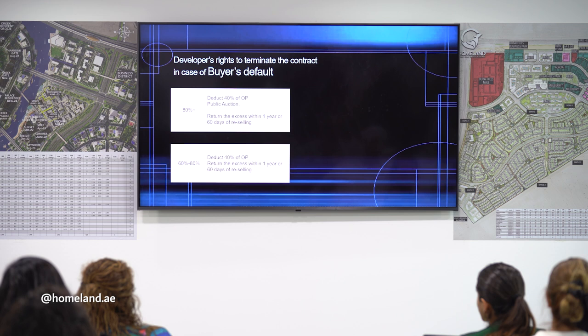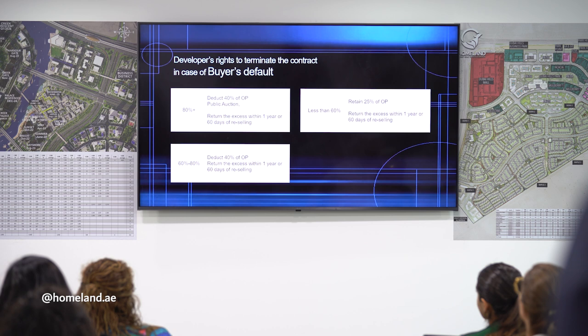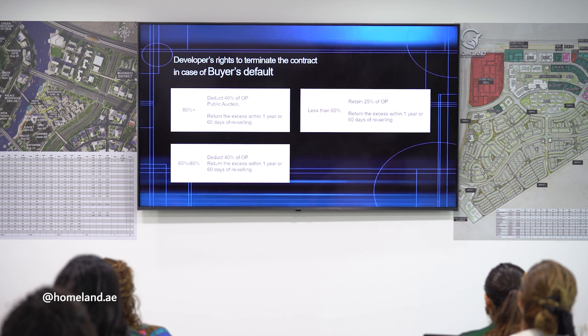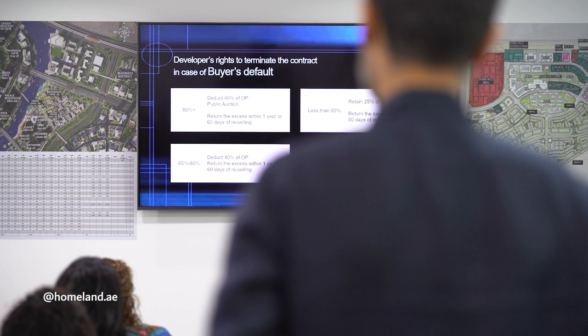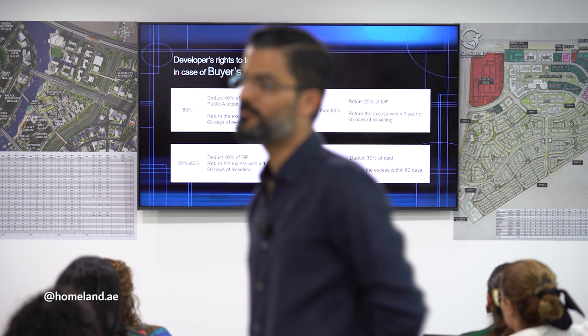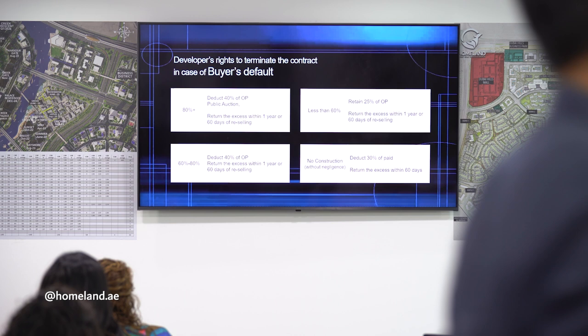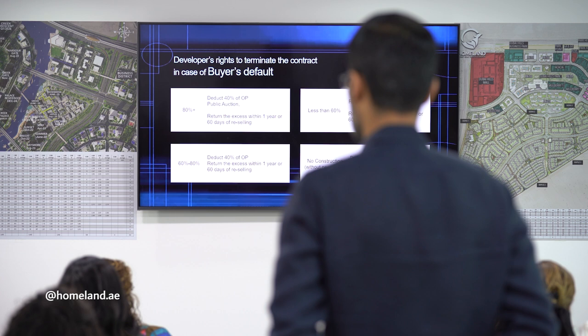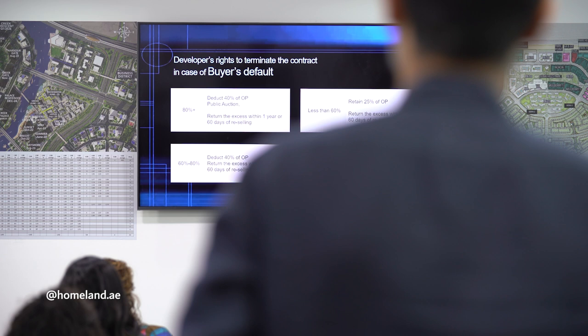If construction progress is less than 60% and the buyer defaults, the client loses 25% of the original price and the excess is returned within one year or 60 days of reselling. If there has been no construction without the negligence of the developer and the client defaulted, 30% of the paid price will be lost and the excess returned to the client within 60 days.